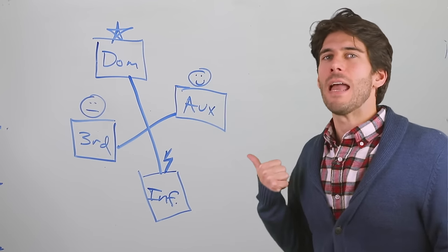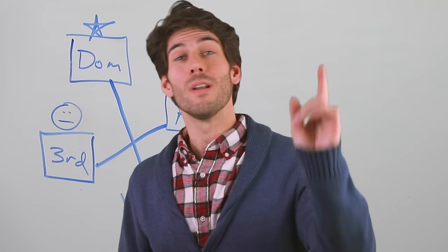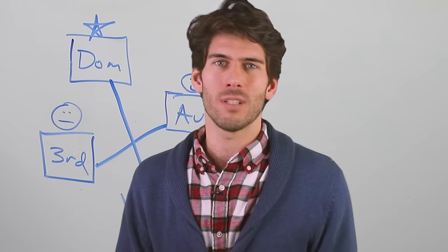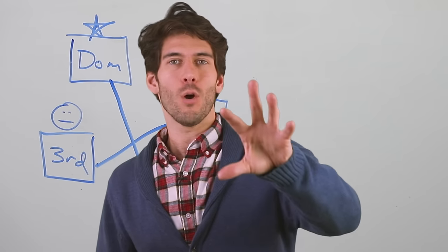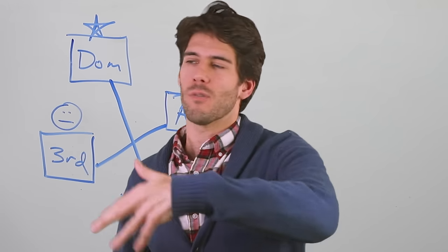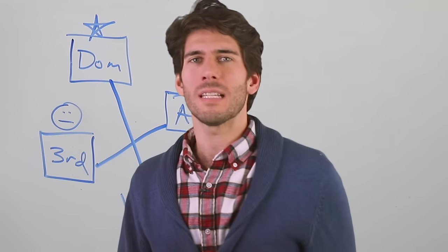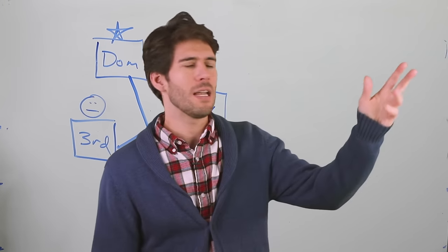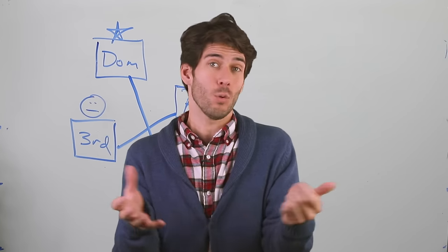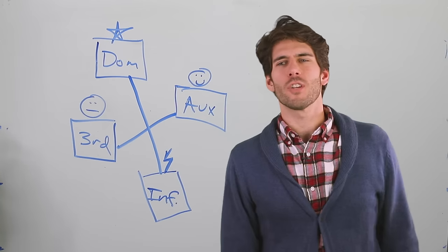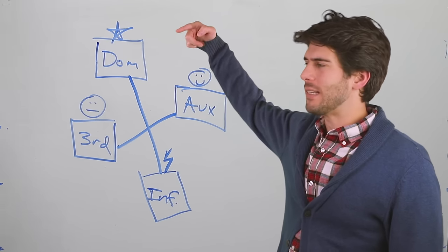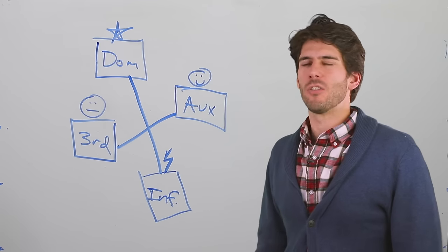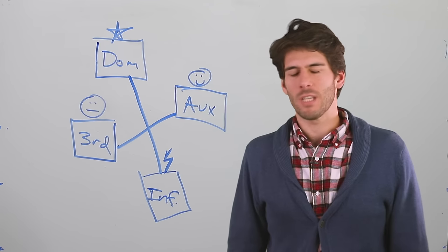And this is the function stack of every type — four functions. Now that you know the formula to figure out the stack from the four letters of the type, try to figure out the function stack for various personalities — all 16 if you want — then Google it to see if you're correct. Thanks for watching. Check out another video about how the 16 personalities interact, or find another video in the playlist. Until next time, stay cool and attractive.